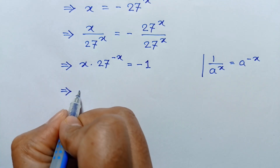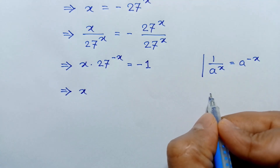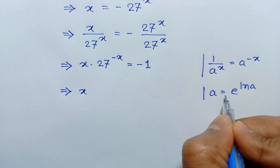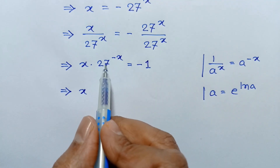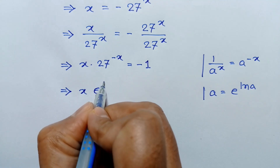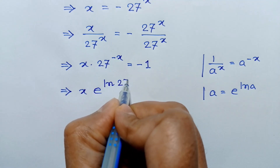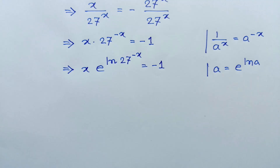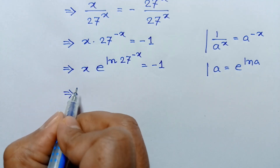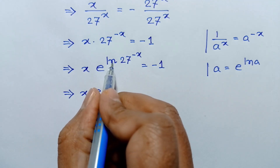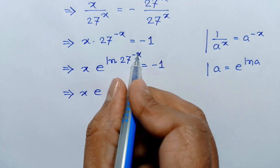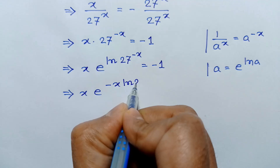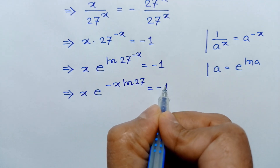Now applying the formula a equals e to the power ln of a. Applying this and considering 27 to the power negative x as a, it can be written as e to the power ln of 27 to the power negative x is equal to negative 1. So x times ln of 27 to the power x equals negative 1.